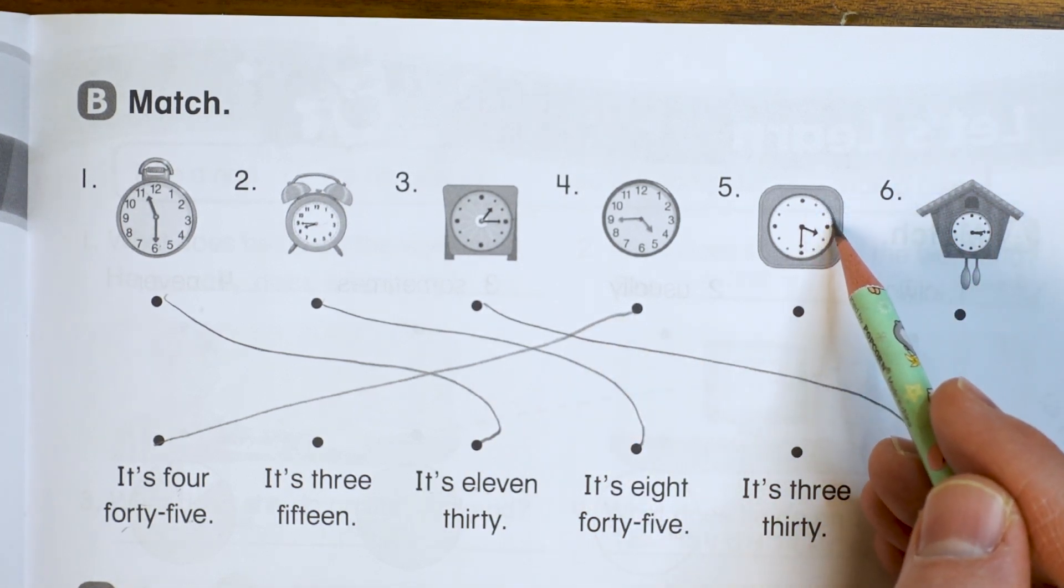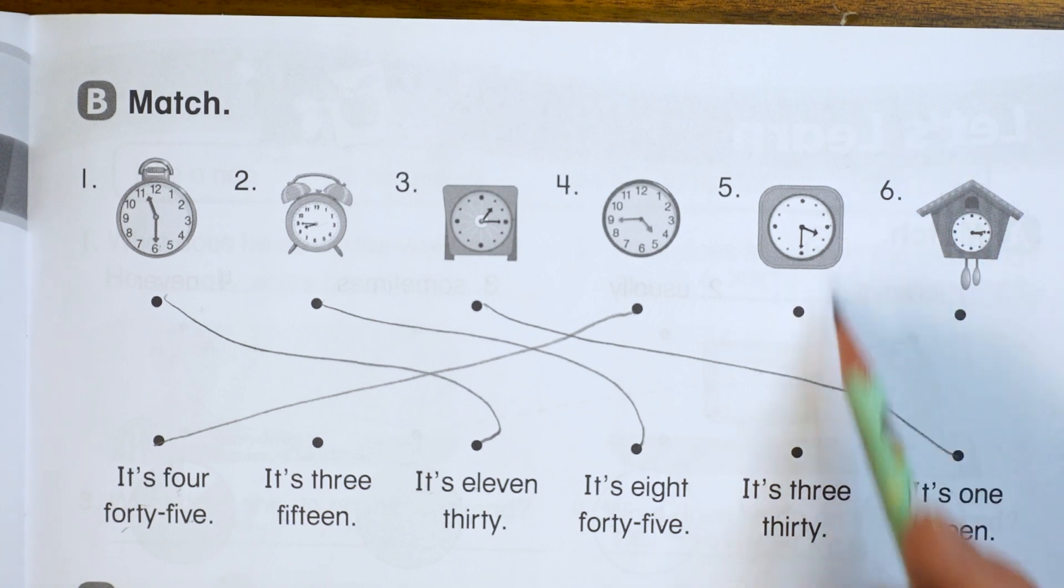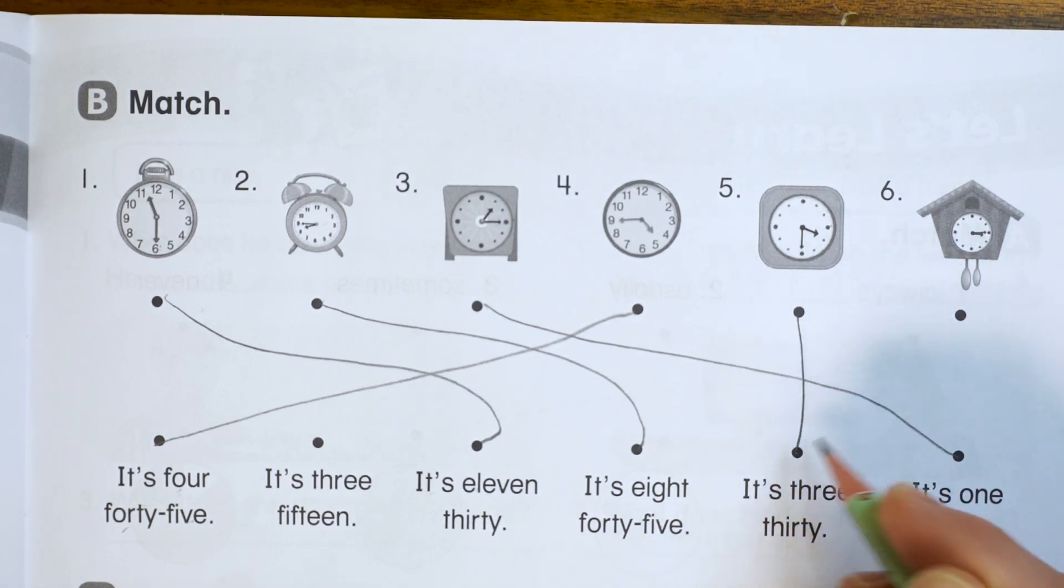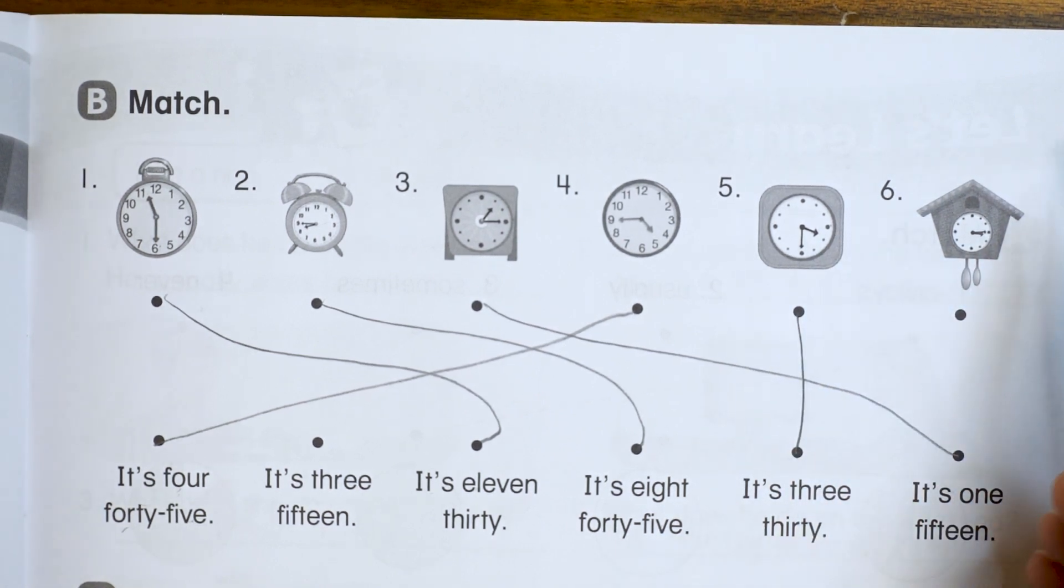The next one, the hour hand is at one, two, three. So it's three. Oh, it's pointing at the six. So 3:30, which is right here. It's 3:30.